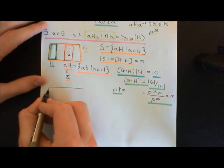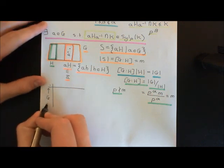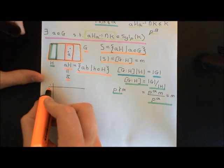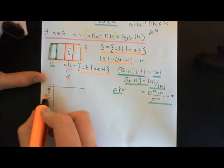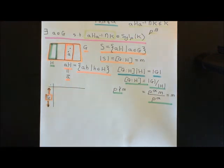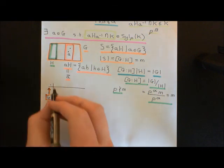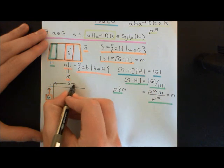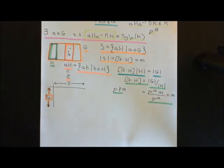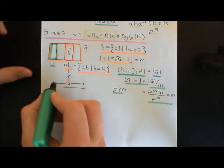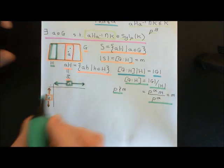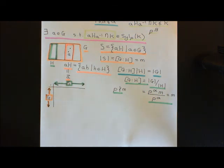We'll give all elements of the group a row, coloured in orange, and all elements of the set S on which the group acts a column in the group action composition table — all the left cosets of H in G will be given a column, denoted in green. So, how am I going to define this group action?